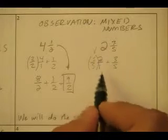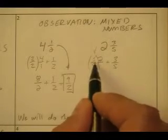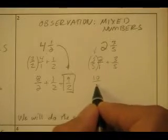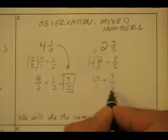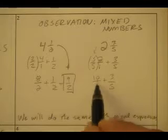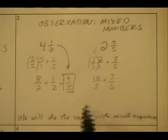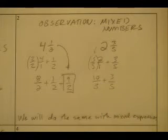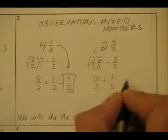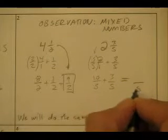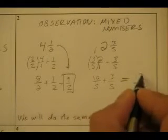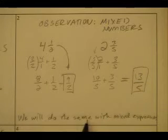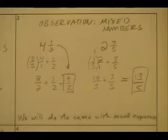Two times five is ten. Ten over five, and five times one is five in the denominator. So I didn't change the value — this is still two wholes. Ten-fifths is the same thing as two. We've got ten-fifths plus three-fifths. How many fifths do I have in all? Thirteen-fifths. We will do the same with mixed expressions.